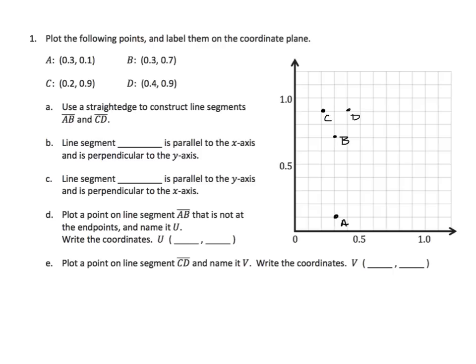It says use a straight edge to construct line segments AB and CD. By a line segment, we need endpoints. I don't have a straight edge on my iPad, so you're going to use a ruler to make a straight edge. We're going to combine C and D, and since it's a line segment, we're going to have endpoints.